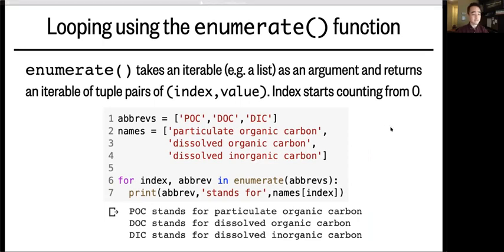And you can iterate on that enumerate object in a for loop. So here we have some abbreviations for chemical species in the ocean and then their full names. Then here we're looping over the iterable returned by calling enumerate on the list of abbreviations.